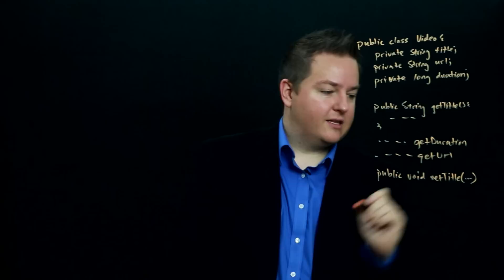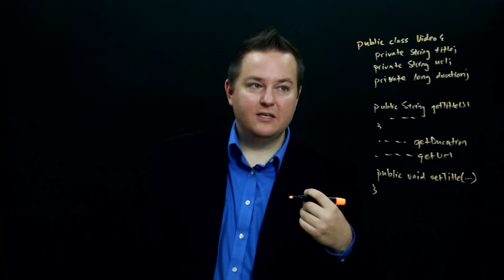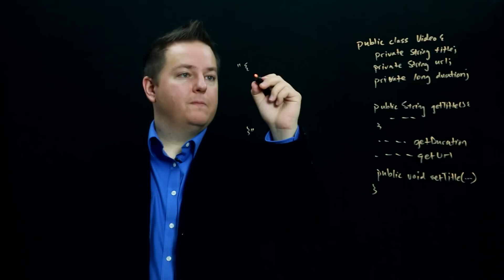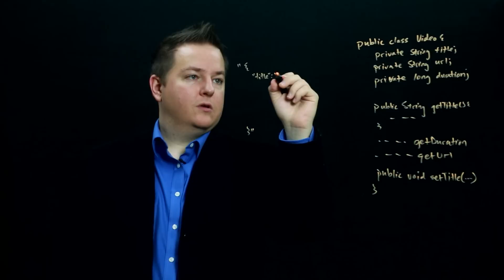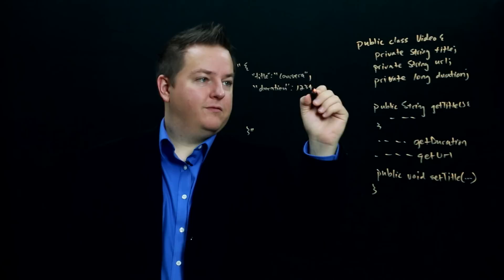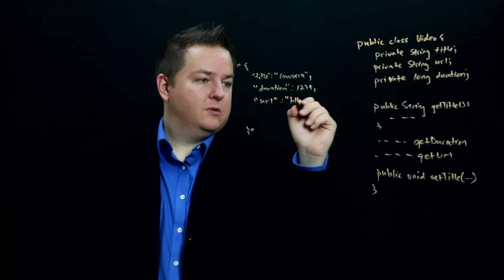So if we had this object, we would like to be able to map JSON into instances of this object. So let's say that we have JSON that looks something like this. So we have a JSON string that looks like we're just going to create this object and we're going to have title Coursera and then we might have duration, some duration 1, 2, 3, 4, 5 or something like that and we would have maybe URL and we have some URL for this thing.